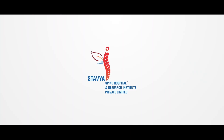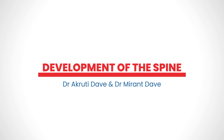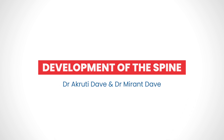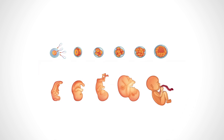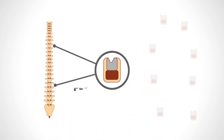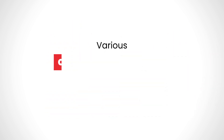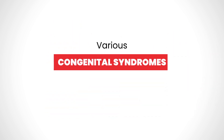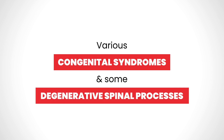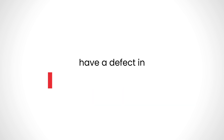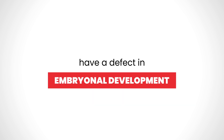Stavvil Spine Hospital and Research Institute: Development of the Spine. The embryo develops in the most astounding ways. The spine develops from pluripotent cells arranging themselves in a vertebral arrangement. Various congenital syndromes and some degenerative spinal processes have a defect in embryonal development.